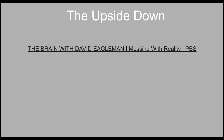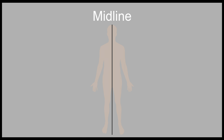Watch this interesting video that explains what happens in the brain when we experience life through an alternate reality. You may have heard the term crossing the midline. The body's midline is an imaginary line down the center of the body that divides it into the left and right sides. When you cross the midline, you are reaching across the body from one side to the other, making it possible to complete actions on the other side of your body.